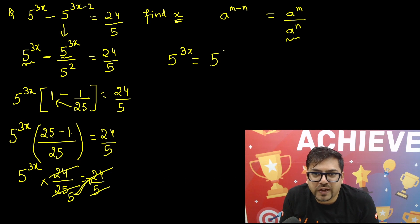So 5 raised to power 3x equals 5. 5 means 5 raised to power 1. So very easily we are able to find that 3x equals 1. Just we are doing this power matching. So 3x equals 1 and hence we have got the value x equals 1 by 3.